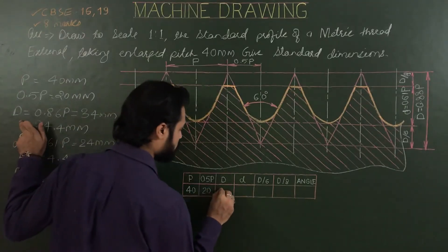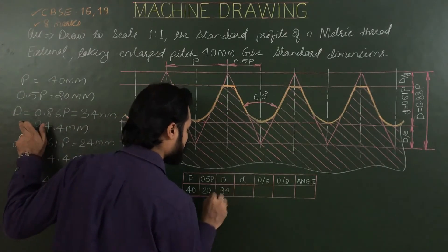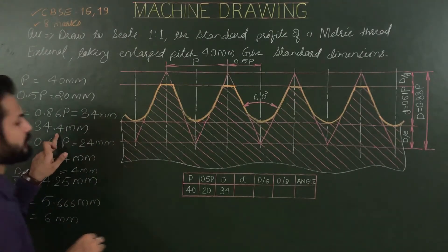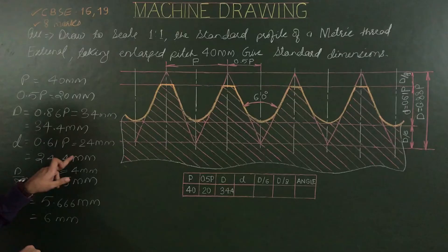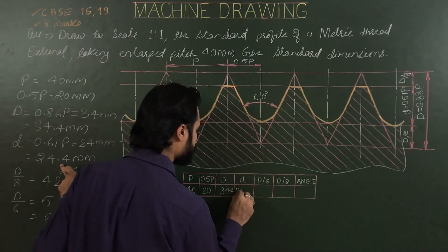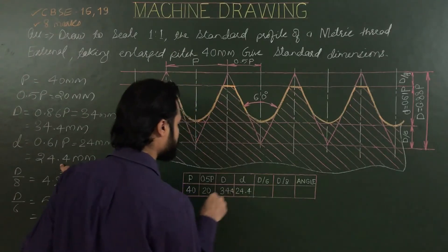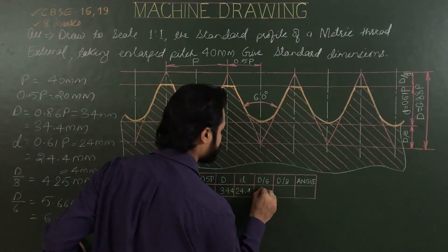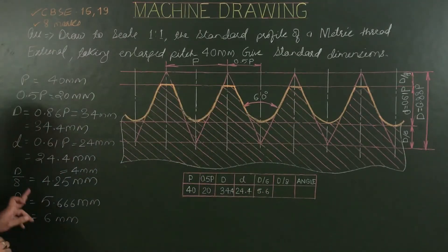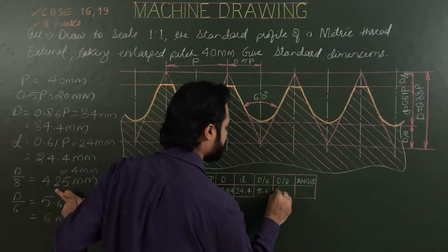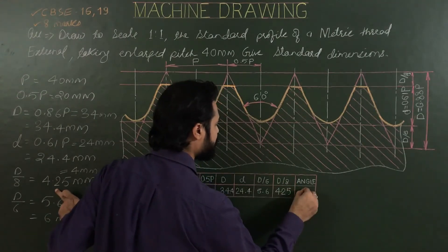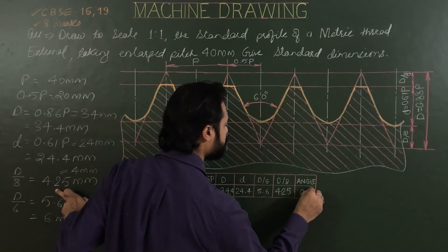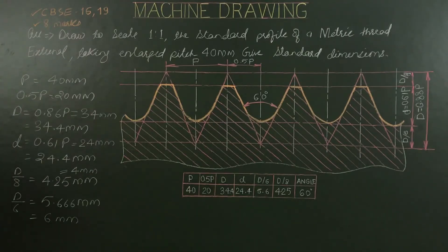In the table, capital D is 34.4mm, small d is 24.4mm, D by 6 is 5.66mm, D by 8 is 4.25mm, and the angle is 60 degrees. These are the standard values of metric thread external.